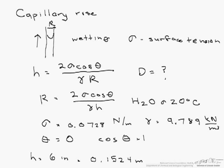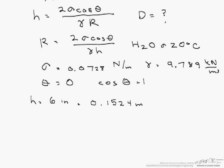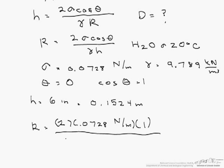And now all we have to do is plug in our numbers. So our radius is going to equal 2 times 0.0728 newtons per meter times 1, all divided by 9.789 times 10 to the 3rd—be careful, that is kilonewtons.